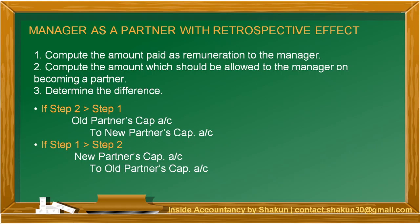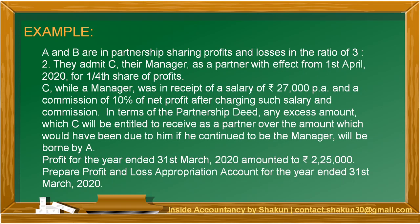Let's take an example. A and B are in partnership sharing profits and losses in the ratio of 3:2. They admit C, their manager, as a partner with effect from 1st April 2020 for one-fourth share of profits. C, while a manager, was in receipt of a salary of ₹27,000 per annum and a commission of 10% of net profit after charging such salary and commission. In terms of the partnership deed, any excess amount which C will be entitled to receive as a partner over the amount due to him as a manager will be borne by A. Profit for the year amounted to ₹2,25,000. Prepare the P&L Appropriation Account for the year ended 31st March 2020.